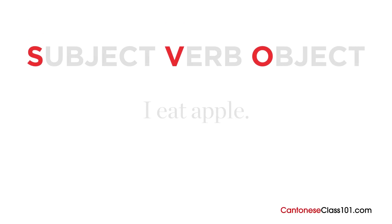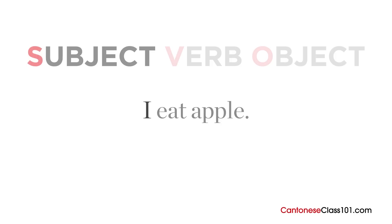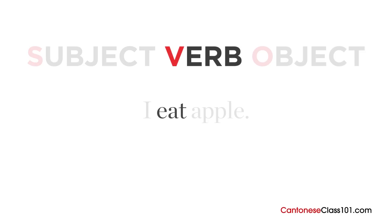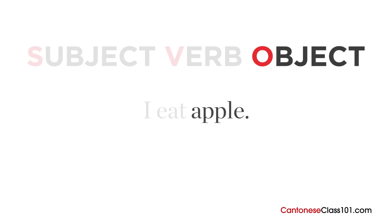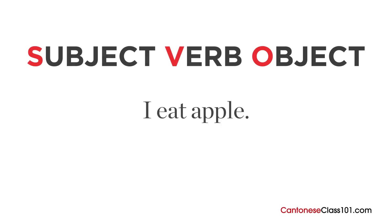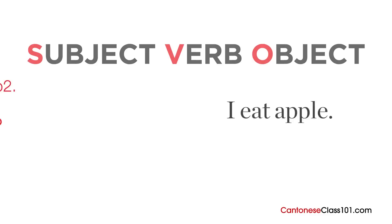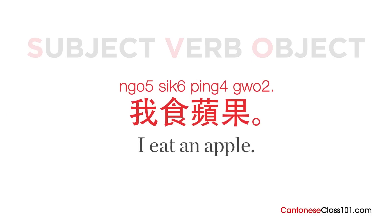If we break down the English sentence 'I eat apple', we can see that the subject 'I' is presented first. This is followed by the verb 'eat', and then finally the object 'apple' is positioned last. This is the basic word order for sentences in English. Now let's compare the same sentence, 'I eat an apple', in Cantonese.